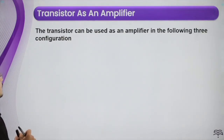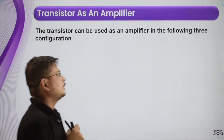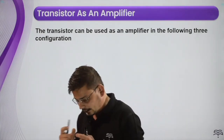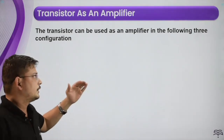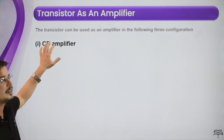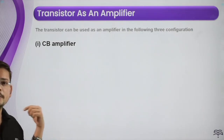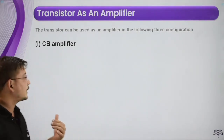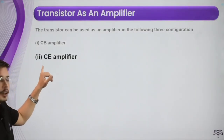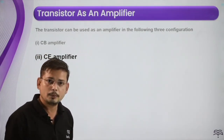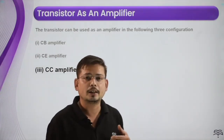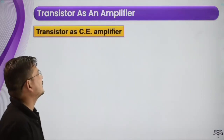Here we talk about transistors that can be used as an amplifier in different methods. Using different configurations, we can use the transistor in different types of amplifiers. First, we use it in the form of a common base amplifier, as we studied in the last class. Second is the common emitter amplifier, and third is the common collector amplifier.